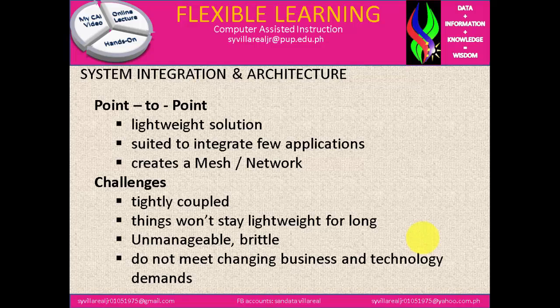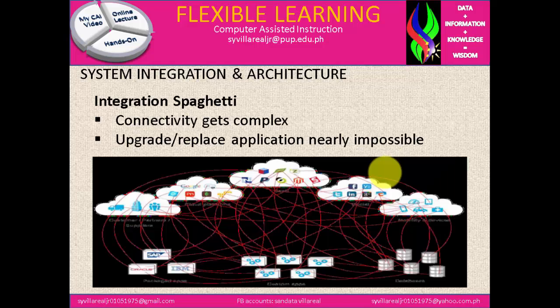Next is point-to-point integration, which is a lightweight solution suited to integrate few applications and create a mesh network. The challenges: it is tightly coupled, things won't stay lightweight for long, it becomes unmanageable and brittle, and does not meet changing business and technology demands. This leads to integration spaghetti, where connectivity gets complex and upgrading or replacing applications becomes nearly impossible.